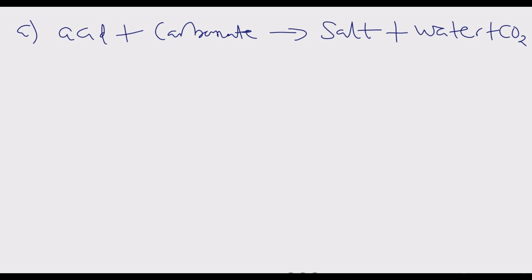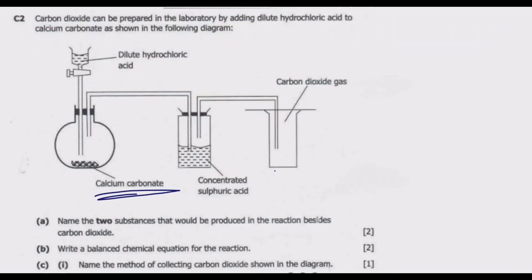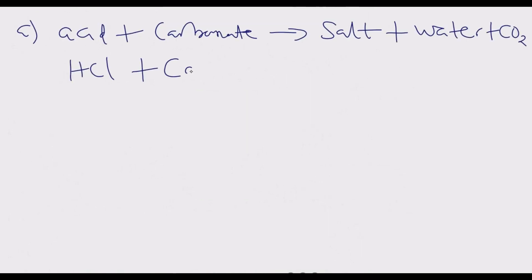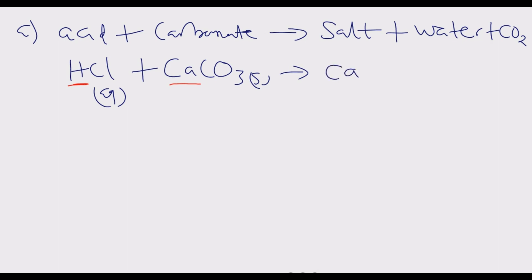We are reacting hydrochloric acid with calcium carbonate — CaCO₃, which is a solid, and the acid is aqueous. Calcium displaces hydrogen in the acid, so we end up with calcium chloride, plus water.